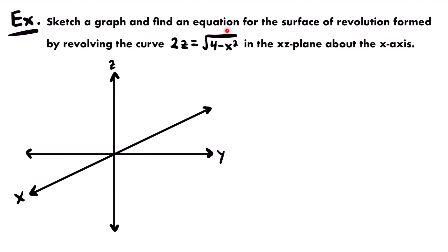Next up, we want to sketch a graph and find an equation for the surface of revolution formed by revolving the curve 2z equals the square root of 4 minus x squared in the xz-plane about the x-axis. Since we are revolving around the x-axis, our radius function must be in terms of x. We need to solve for z: dividing both sides by 2 gives us z equals the square root of 4 minus x squared divided by 2. That is our radius function r of x.